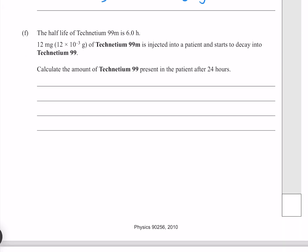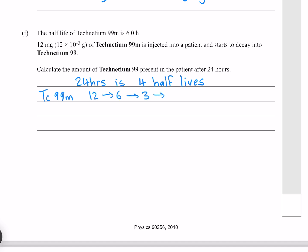The half-life of technetium-99m is 6 hours. 12 mg of technetium-99m is injected into a patient and starts to decay into technetium-99. Calculate the amount of technetium-99m present in the patient after 24 hours. 24 hours is 4 half-lives. 6 hours fits into 24 four times, which means that 24 hours is 4 half-lives, which means that our technetium-99m starts at 12, halves once to get to 6, twice to get to 3, 3 times to get to 1.5,